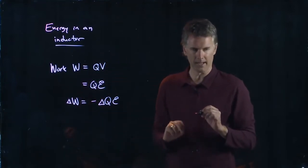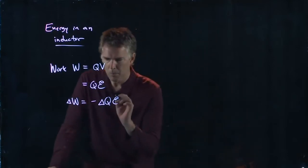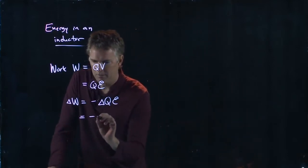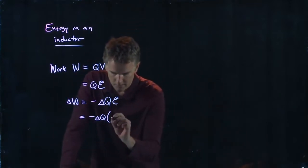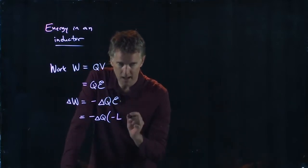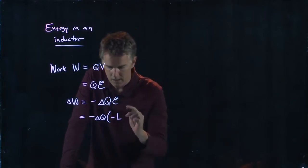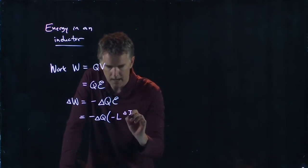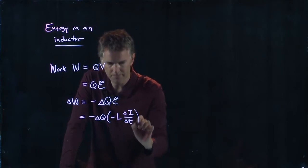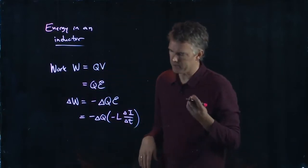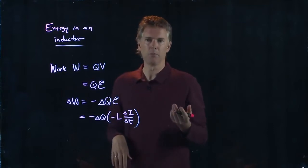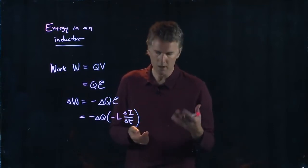Don't worry too much about the negative sign. But we know what epsilon is for an inductor. It is self-inductance L, which is a value, times delta I over delta T. L is the value of the inductor and it's measured in Henrys, so you might have a milli-Henry inductor.